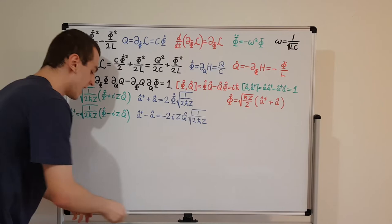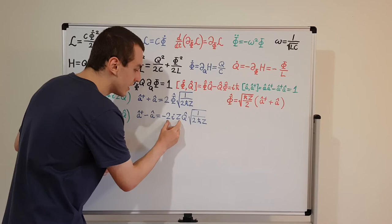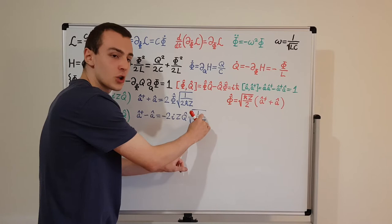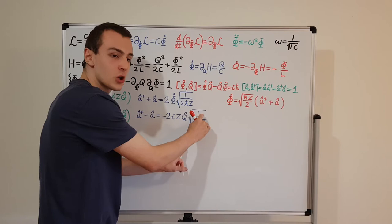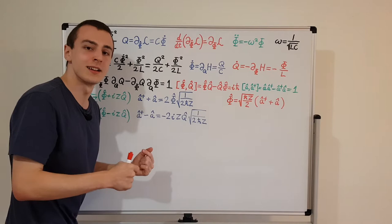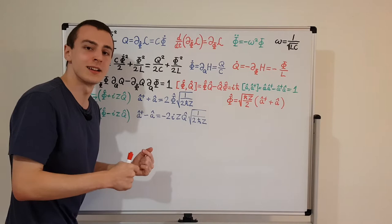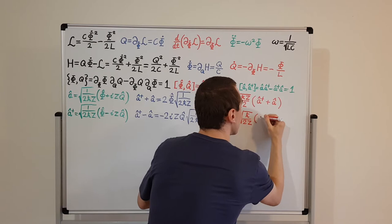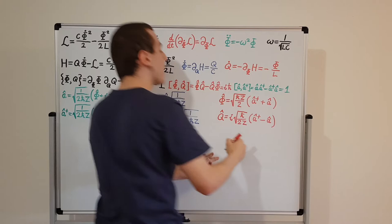Now let's isolate Q. We bring in the 2Z inside, it becomes (2Z)² which partially cancels, leaving h-bar in the bottom and 2Z in the top. When we move the minus i to the other side, it turns into plus i, because minus i is the reciprocal of plus i. So Q-hat equals i times the square root of h-bar over 2Z times (a dagger minus a).